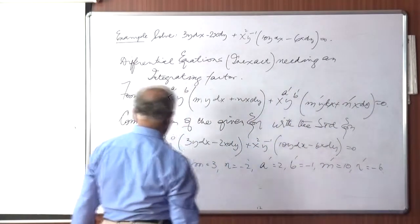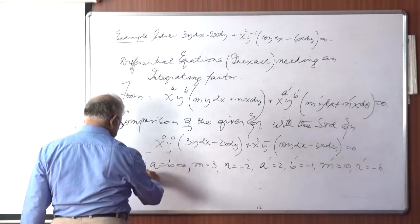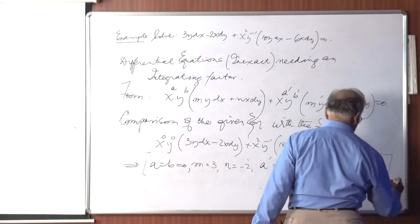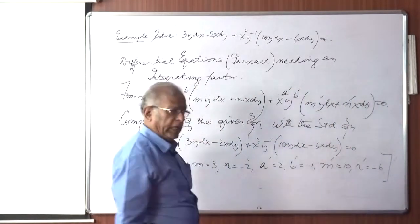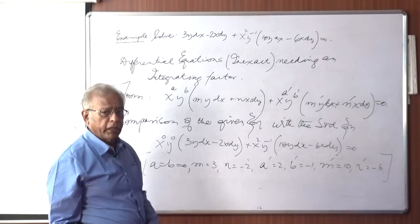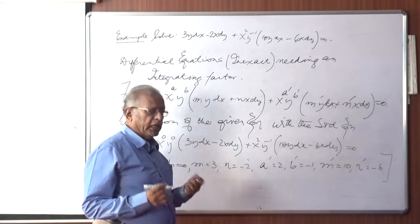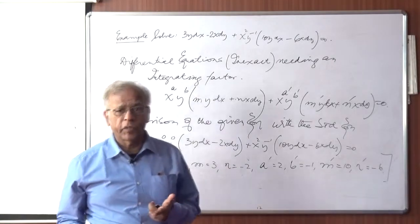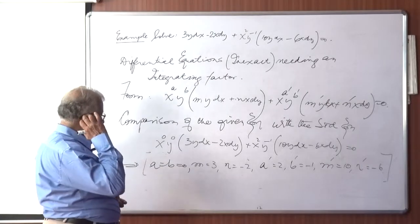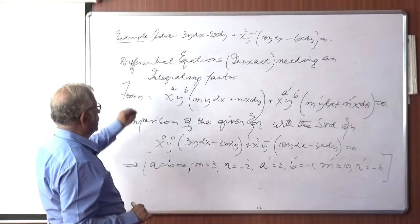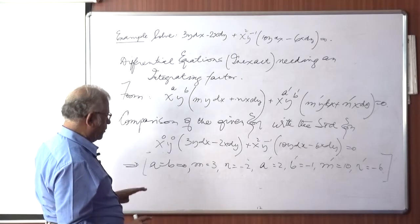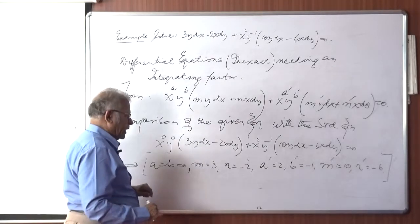So the integrating factor is x^h · y^k, where h and k have to be determined from a pair of equations. We will keep the original equation and set about finding the values of h and k.